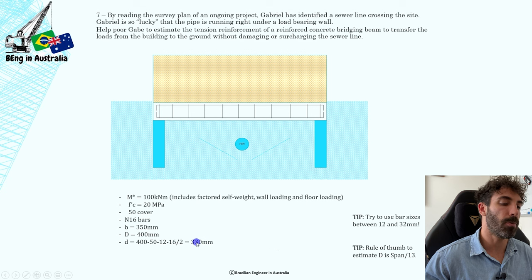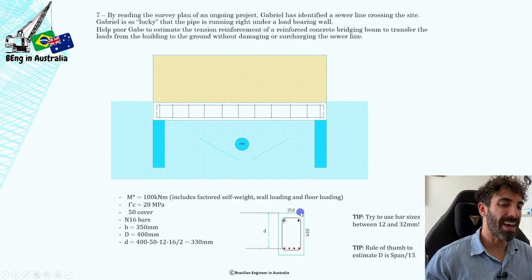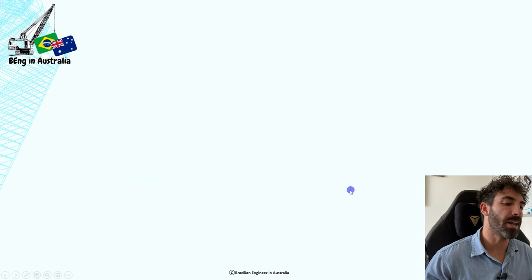The width of the beam is 350 millimeters, the depth is 400 millimeters. The effective depth of the beam, which is the distance from the extreme compression fiber to the centroid of the bottom bars, works out to be the total depth of the beam minus the cover minus the diameter of the legs minus half of the diameter of the bottom bars. That works out to be 330 millimeters. Now that we have all the data we need, we're going to determine the required area of tension reinforcement.